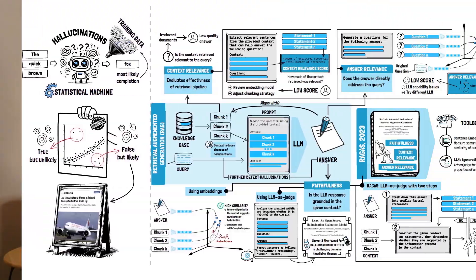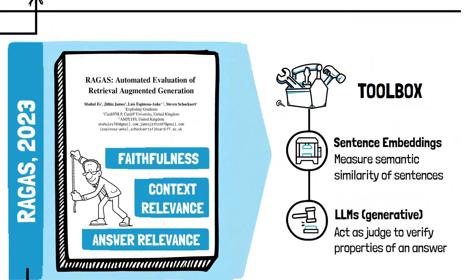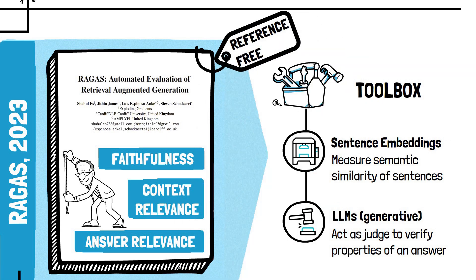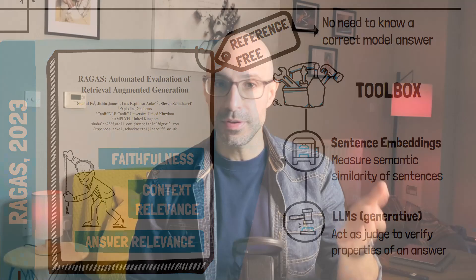The metrics we saw are said to be reference-free, meaning that we can calculate them without needing to have a correct reference answer. This is important because in production, when we are answering a user's question, we don't know the answer already — that's why we're using an LLM to answer that question.